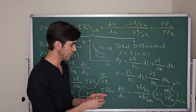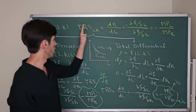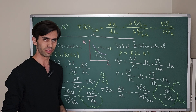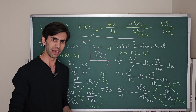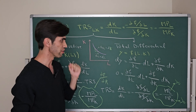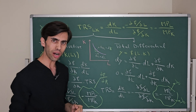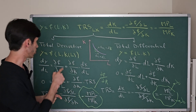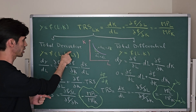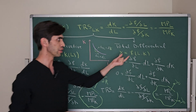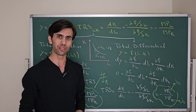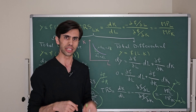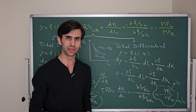So finally, this is the proof of Technical Rate of Substitution of L for K. I hope it's clear how to derive TRS using two methods: total derivative and total differential. If you like this video, please consider subscribing and watch my next videos as well. See you next time.